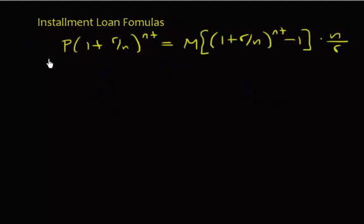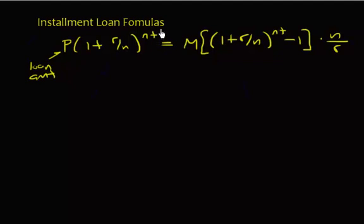Now this formula will work — because again here is your loan amount — this will work for any loan, as long as it's an installment loan. Any loan, any interest rate, any compounding period, for however many years you want the loan to be. But you'll see in different textbooks formulas that, for the same thing, will look different.